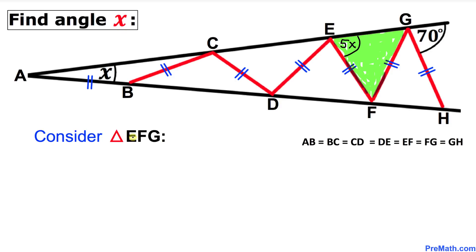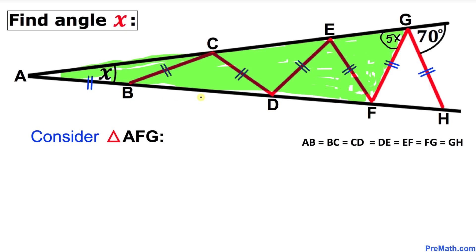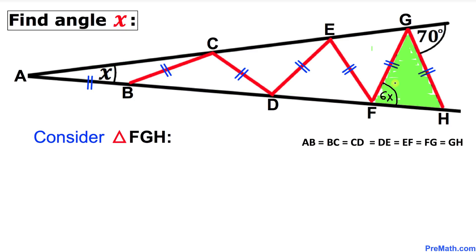Now let's focus on the next triangle EFG. F is our exterior angle, and this equals the sum of the two opposite interior angles. Triangle FGH is an isosceles triangle, so if this angle is 6X, this angle has got to be 6X as well.